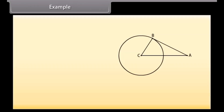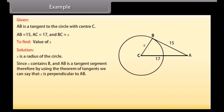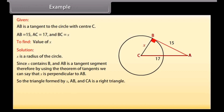Example. Look at this figure. AB is a tangent to the circle with center C. AB is 15, AC is 17, and BC is X. We have to find the value of X. We can see that X is a radius of the circle. Since X contains B and AB is a tangent segment, by the theorem of tangents X is perpendicular to AB. So the triangle formed by X, AB, and CA is a right triangle. By the Pythagorean theorem: 15² + X² = 17². So X² = 64, which gives X = 8.